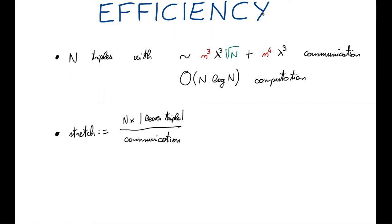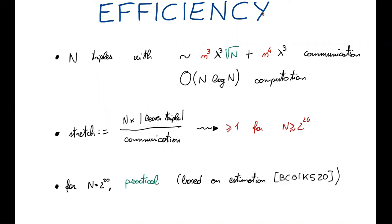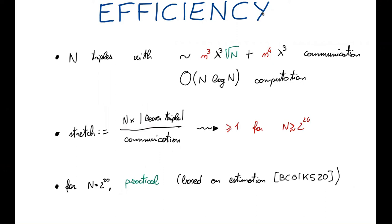We analyze the efficiency of the protocol by considering the stretch, defined as the ratio between the total size of the outputs and the total communication — the larger the stretch, the better. We observe that the stretch becomes greater than one for a very large number of triples, in particular for n approaching 2^24, which is close to 16 million. Even for smaller values of n, our protocol is practical based on estimations by Boyle et al. Moreover, the total communication is roughly 10 times better than Overdrive.